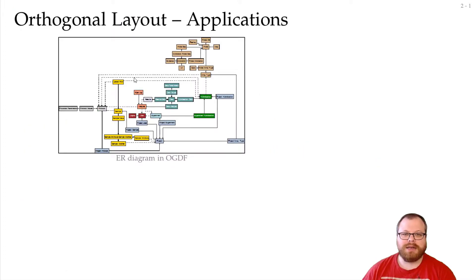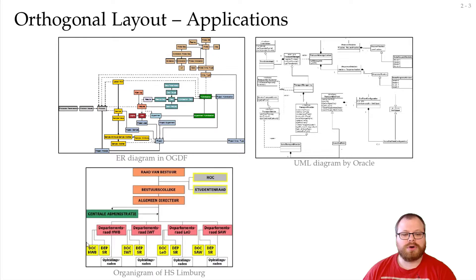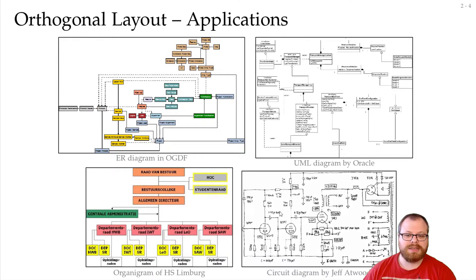These types of drawings we can find a lot in applications. For example, if we look at an entity relationship diagram here from the open graph drawing framework, this is often drawn in its orthogonal style. Also for UML diagrams and for organigrams, that's what we usually use. Finally, for circuit diagrams also often orthogonal layouts are used. And if you look at the layout of all the circuits on your mainboard, then you will see that most of those will also be drawn vertical or horizontal and many of them also diagonal.